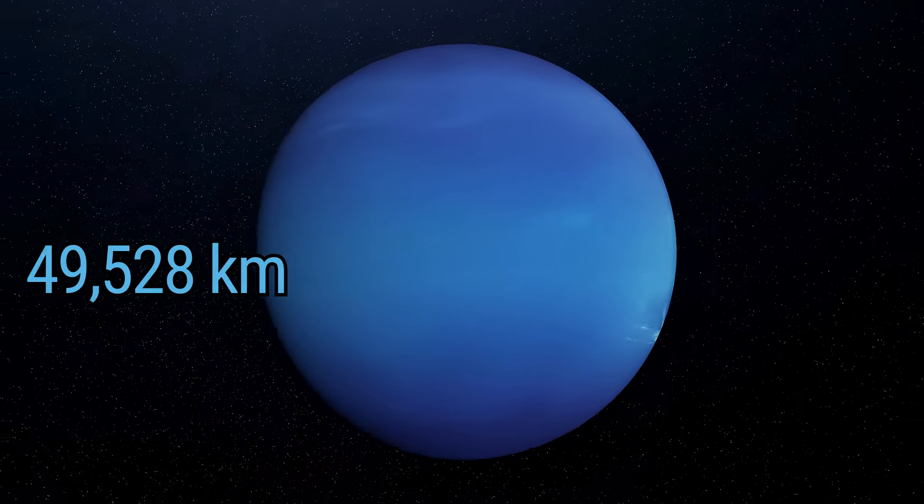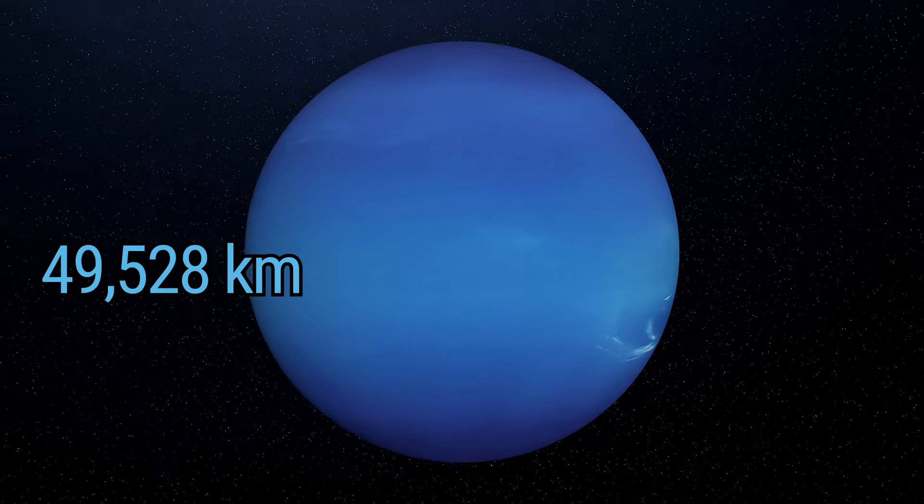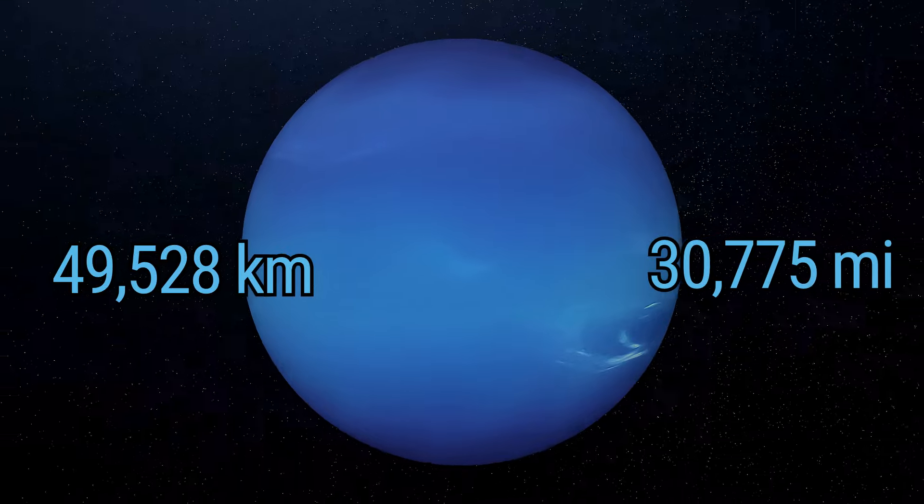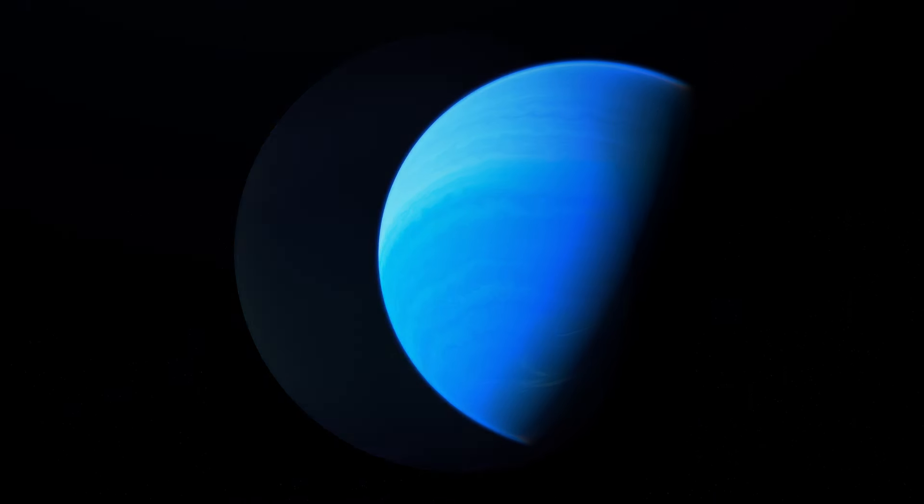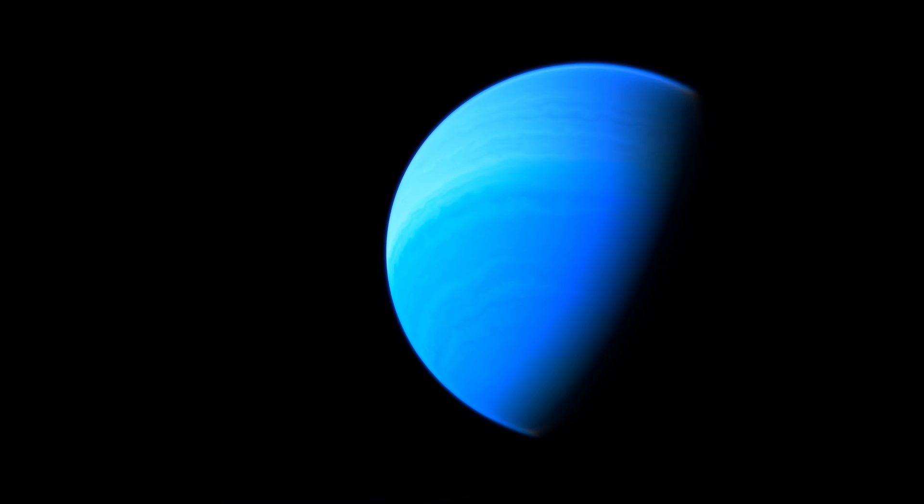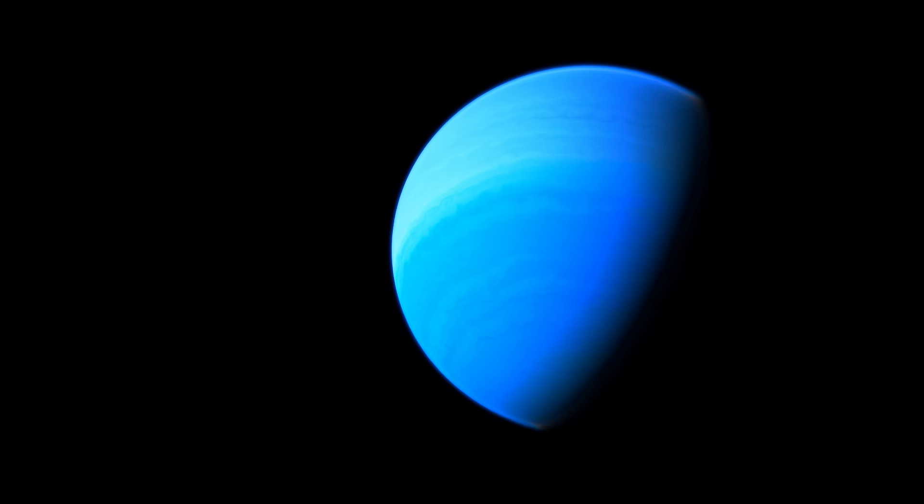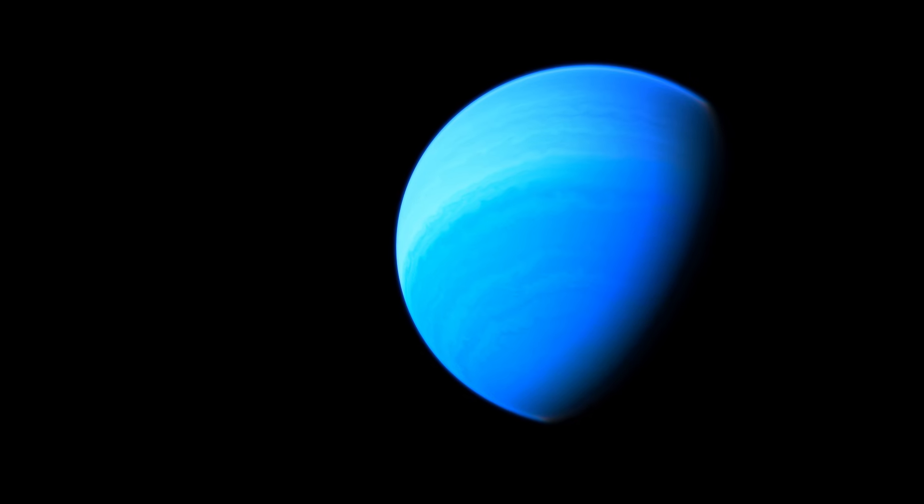Neptune's diameter is 49,528 kilometers, or 30,775 miles. Its atmosphere, rich in hydrogen, helium, and methane, casts a deeper blue shadow in the solar system.